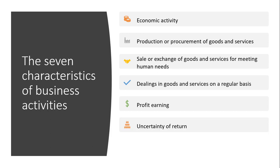The next key element of a business is the uncertainty of return. This refers to the lack of knowledge relating to the amount of money that the business is going to earn in a given period. Every business invests money, also known as business capital, to run its activities with the objective of earning profit, but it is not certain as to what amount of profit will be earned. There is always a possibility of losses being incurred in spite of the best efforts put into the business.